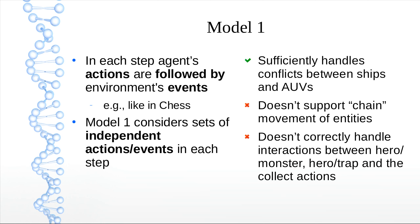More importantly, this model does not correctly handle interactions between the hero and monster. For instance, if the hero with a sword moves to a room with a monster, the hero can kill the monster before it has a chance to run away. On the other hand, if an empty-handed hero moves to a room with a trap, the trap might trigger without giving the hero a chance to disarm it. And for collect actions, the agent whose turn comes first will simply collect the resource.